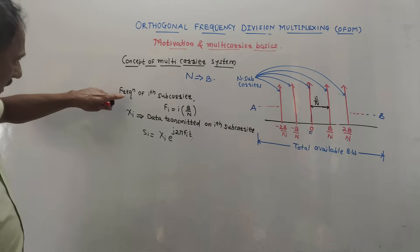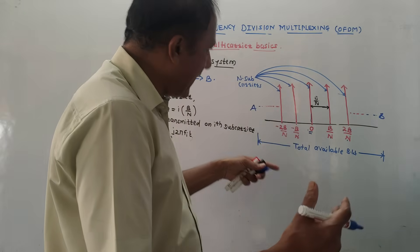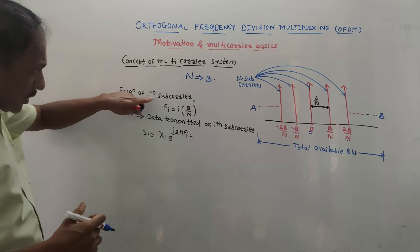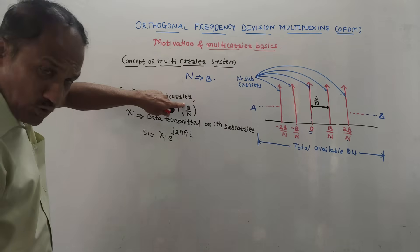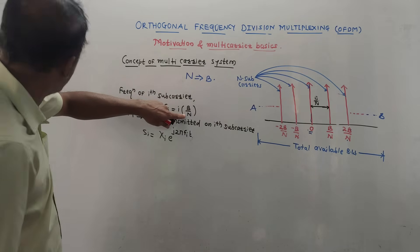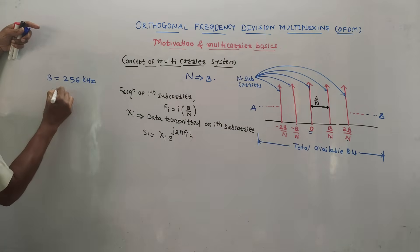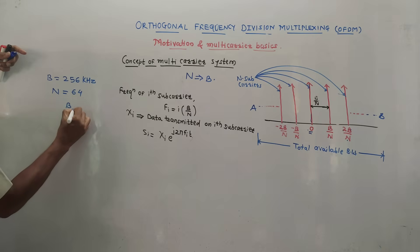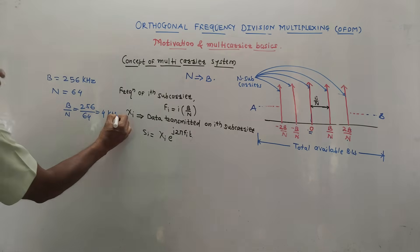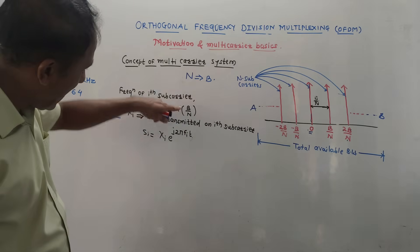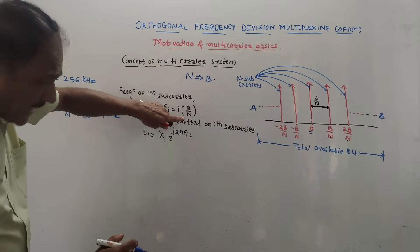The frequency of the ith sub-carrier is denoted fi, where i represents the first, second, third sub-carrier and so on. fi is given as i × (B/N). For example, if total bandwidth is 256 kHz and we use 64 sub-carriers, then B/N = 256/64 = 4 kHz. So the separation between sub-carriers is 4 kHz, and they are separated from each other across the entire available bandwidth.